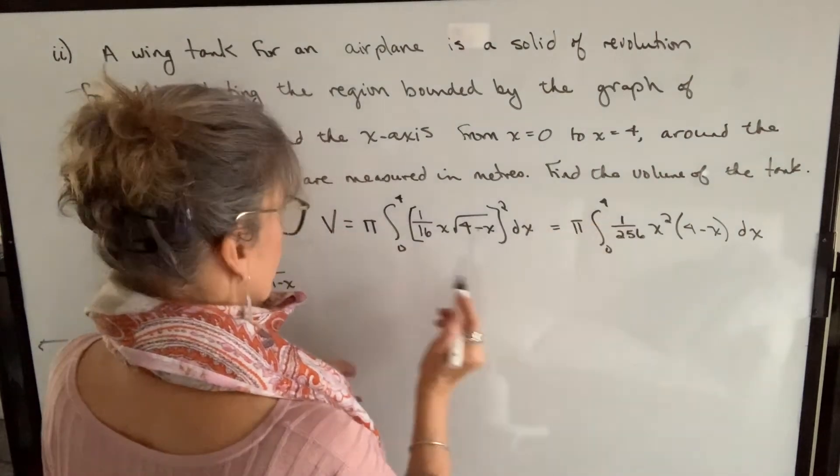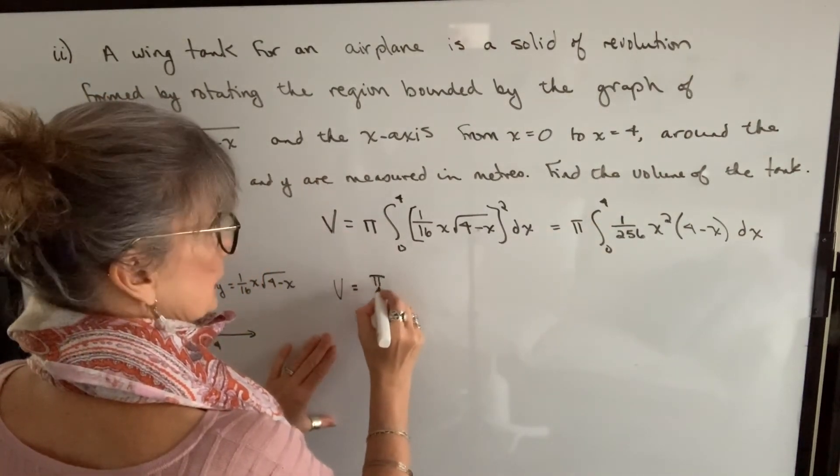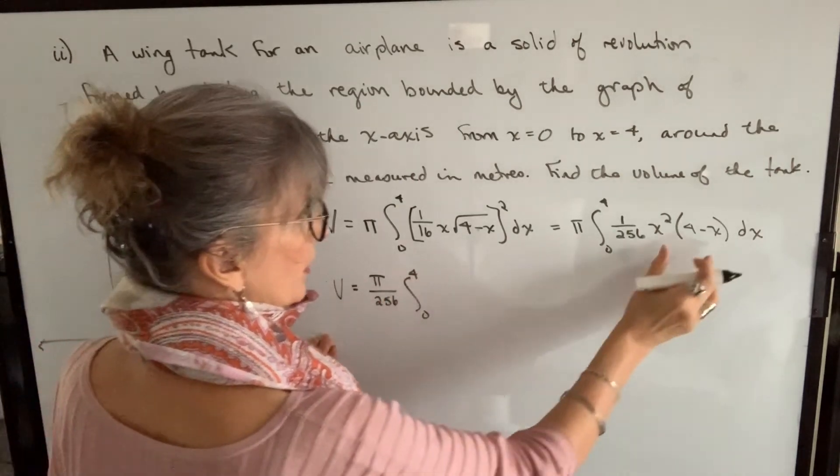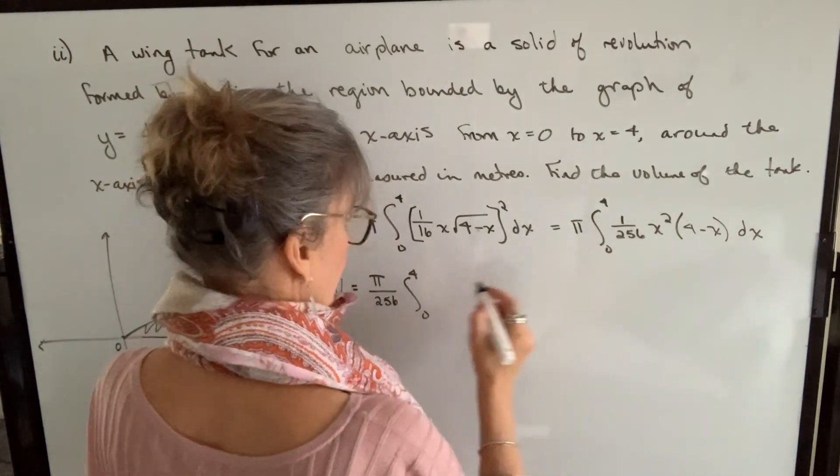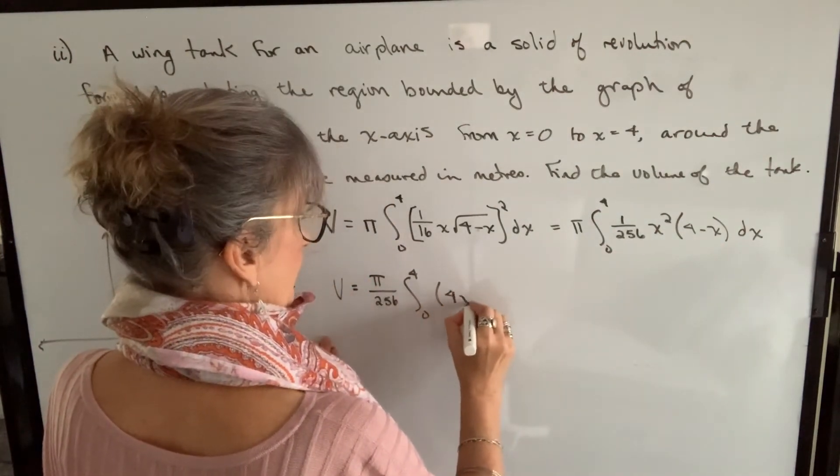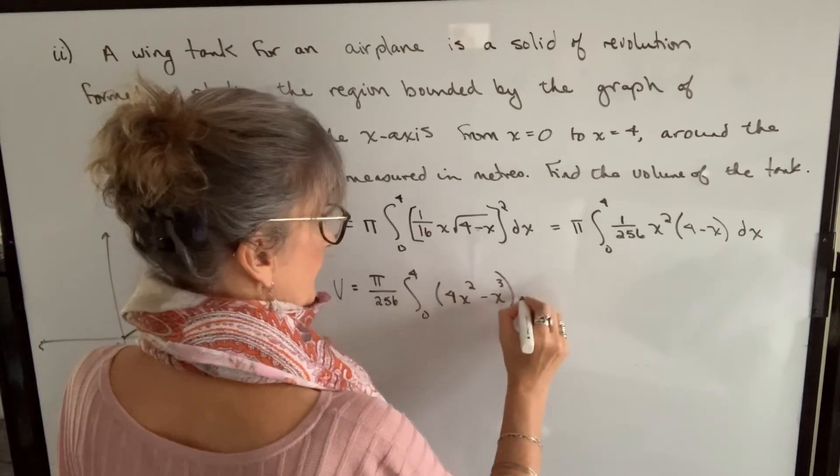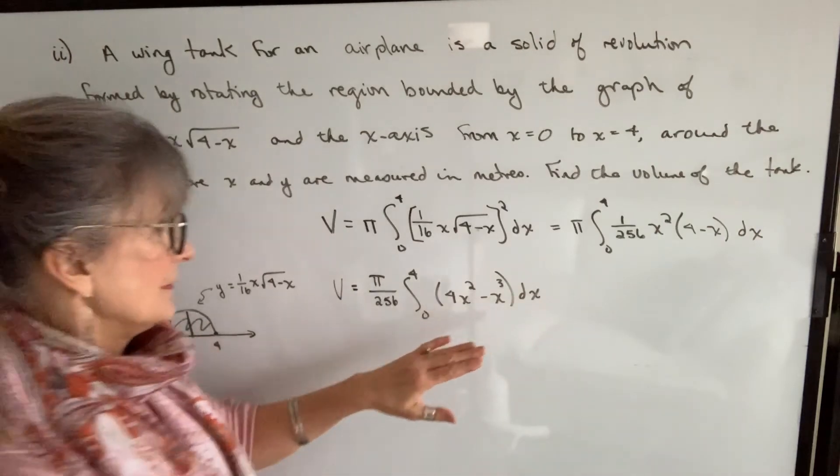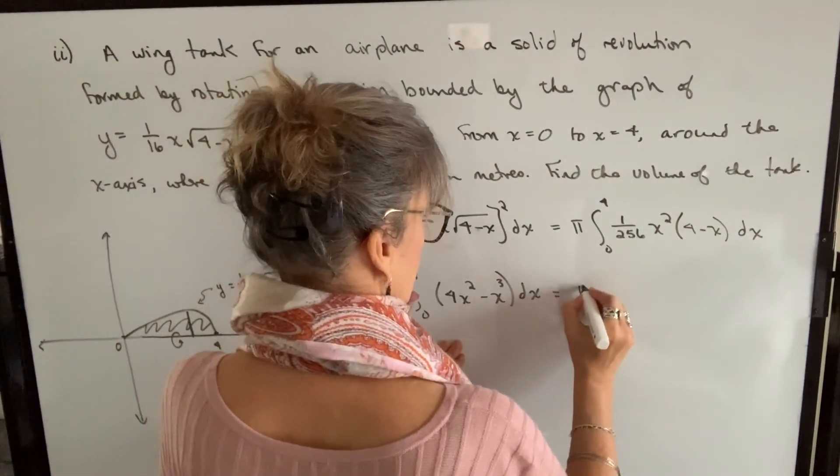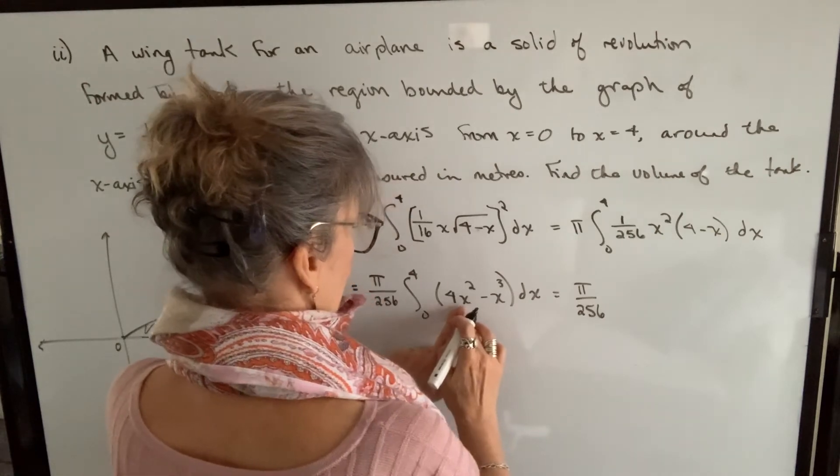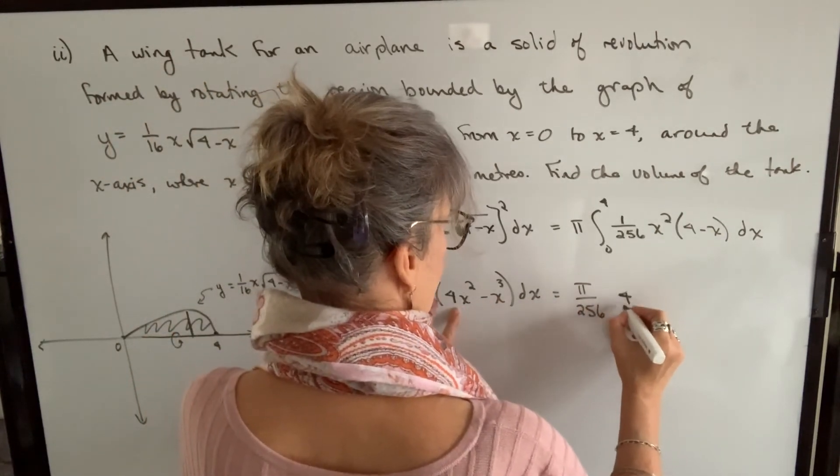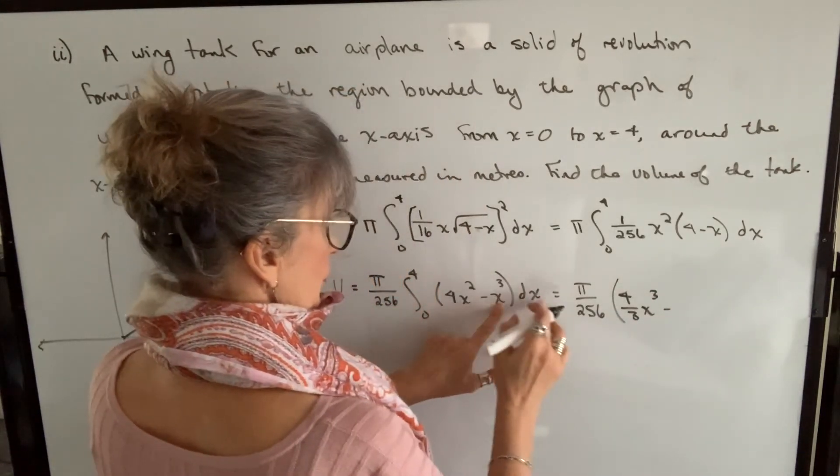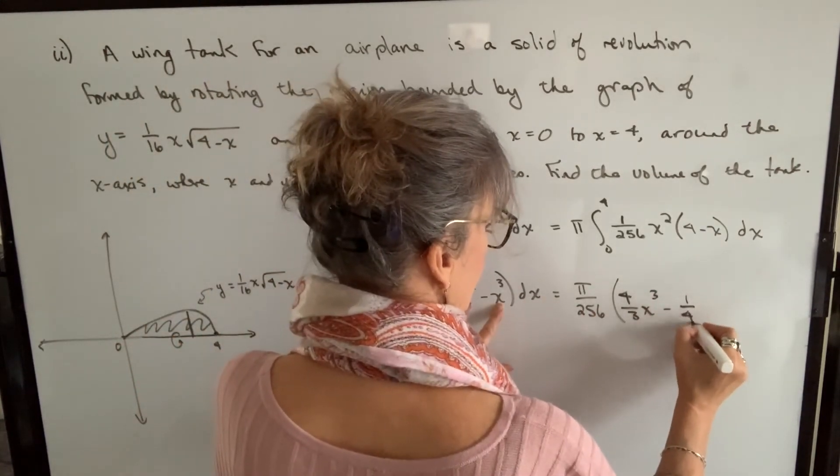This is a constant. I'm going to move that out in front of the integral sign as well. And then what I'm going to do, I've got a product here. I'm just going to multiply through. So that will be 4x squared minus x cubed. Now that I have it simplified, I can integrate. So the integral of 4x squared dx will be 4/3 x cubed minus the integral of x cubed dx will be 1/4 x to the fourth.